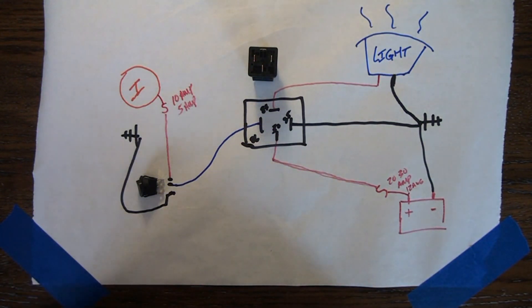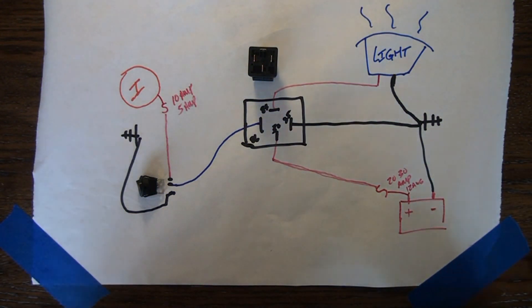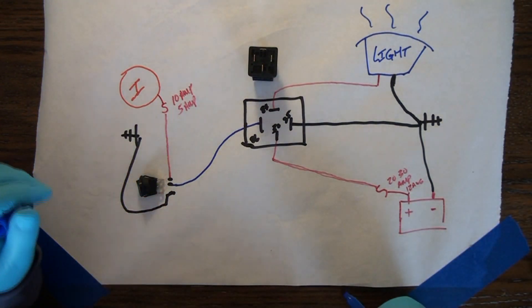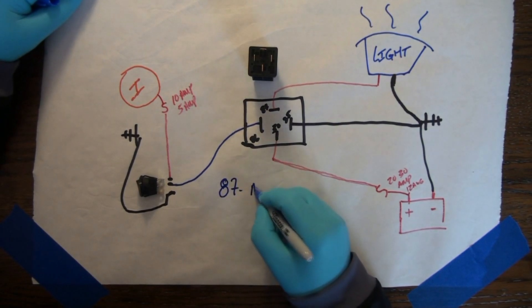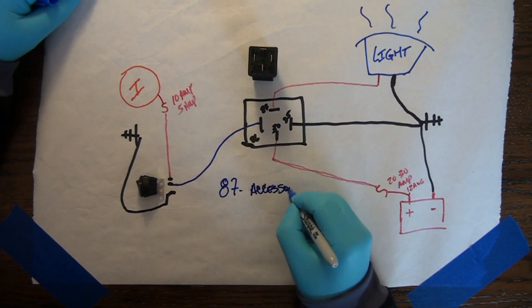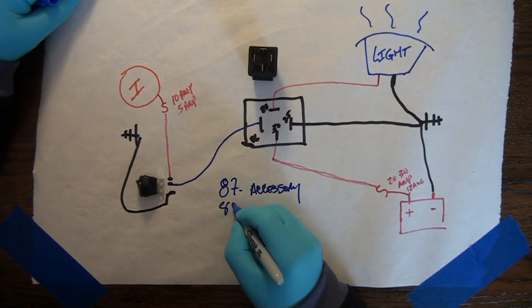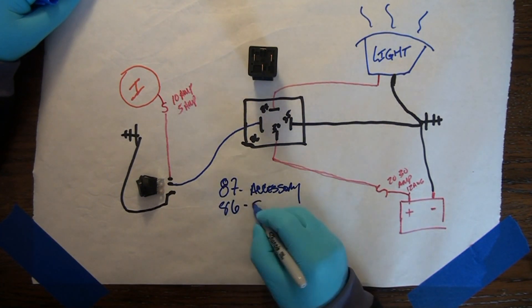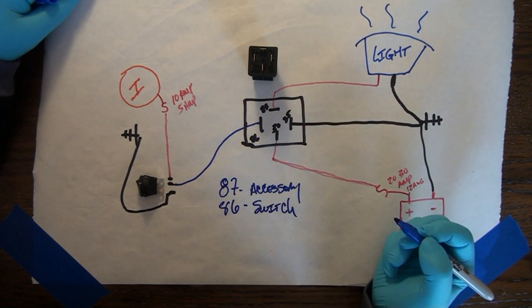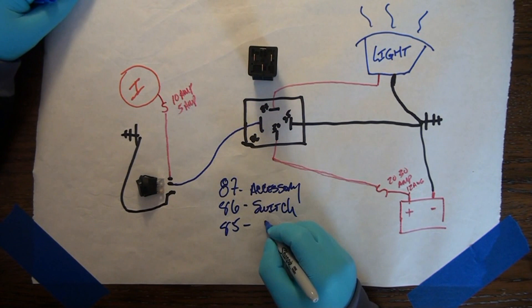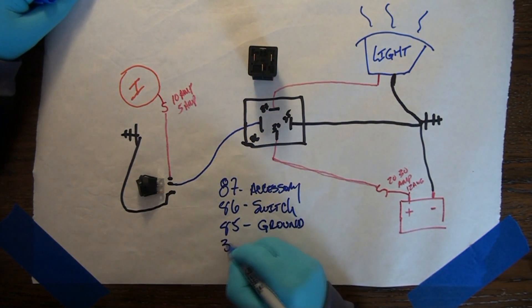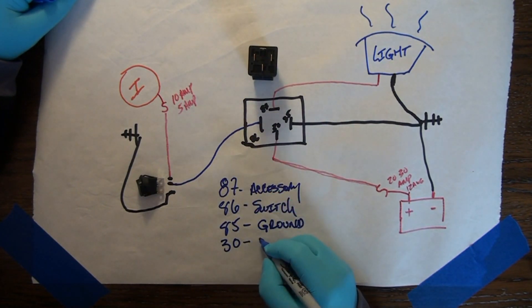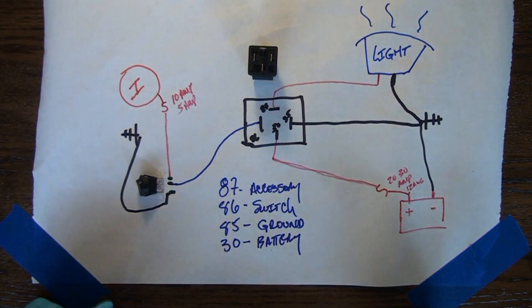Let's use the blue marker because that's the most contrasted. On the relay, number 87 goes to your accessory, number 86 goes to your switch, number 85 goes to ground always, and number 30—the oddball—goes right to battery. That's it. I can't make it any easier than that.